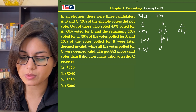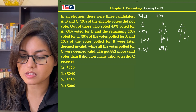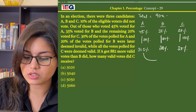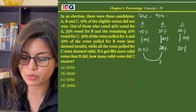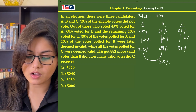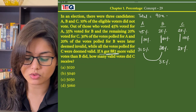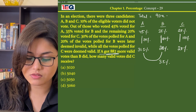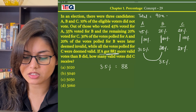All votes for C are valid, so that is 20%. The difference between valid votes for A and valid votes for B is 31.5% − 28% = 3.5%. According to the question, A got 882 more valid votes than B.